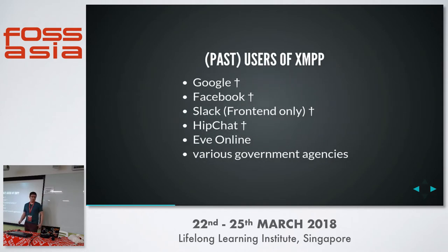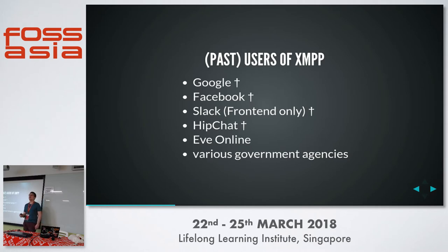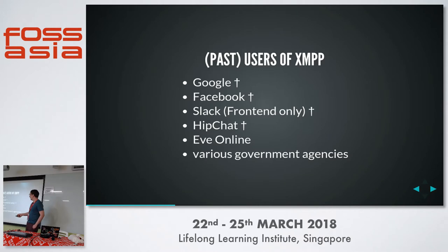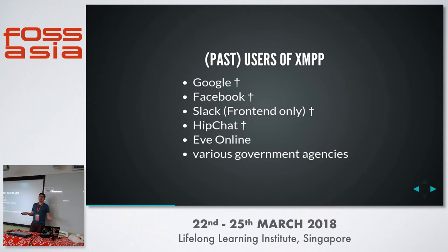XMPP was actually fairly widely deployed at some point. Most famously, Google used it in their product called GTalk, and Google even participated in advancing the standard and created their own protocol extensions. However, a lot of them have abandoned their XMPP services and switched to something else. Most recently, Slack announced that they are going to shut down their XMPP gateway in a month or so.